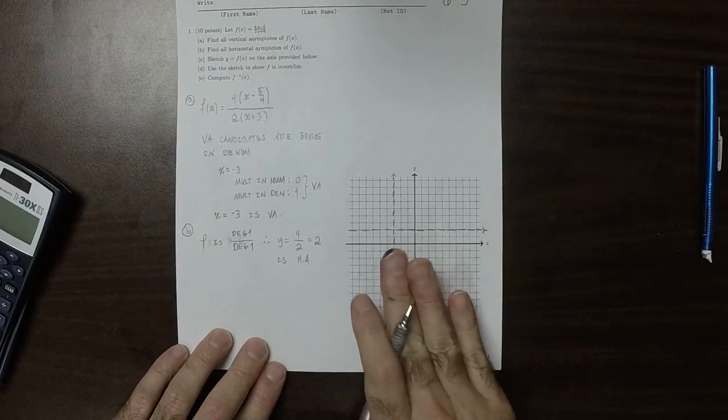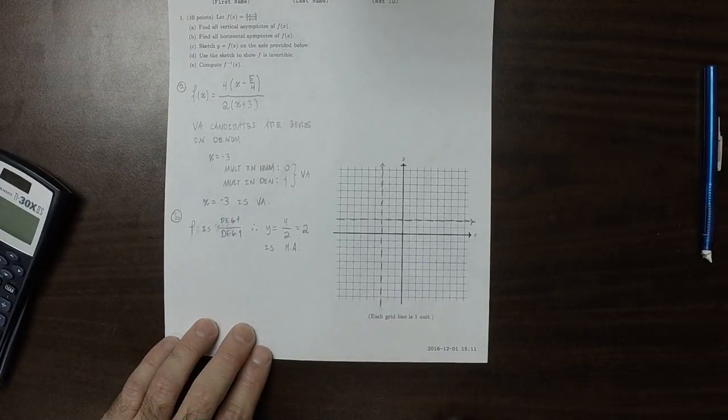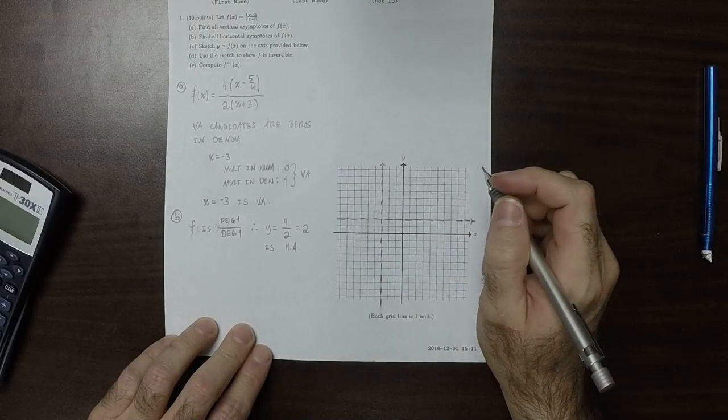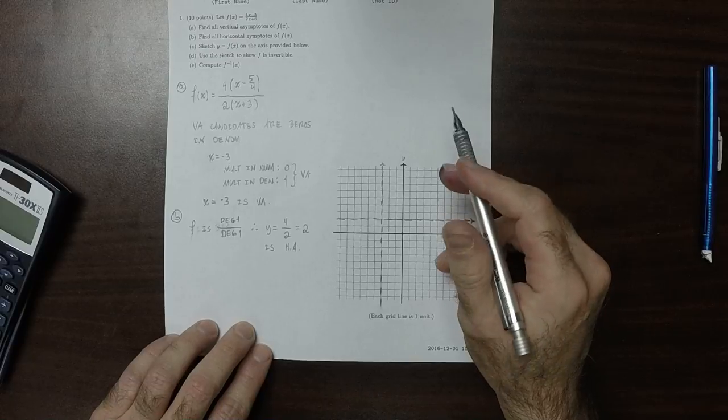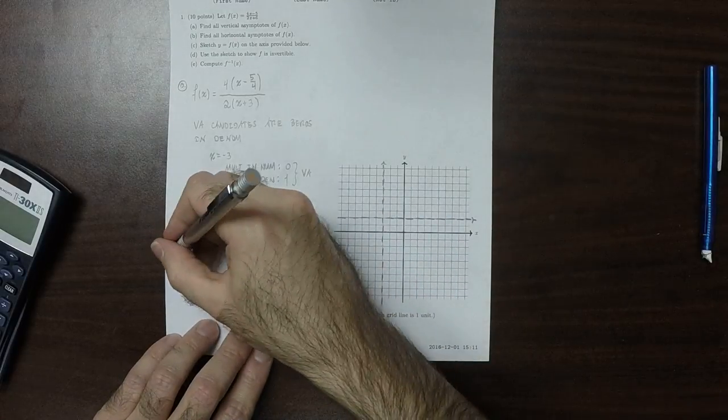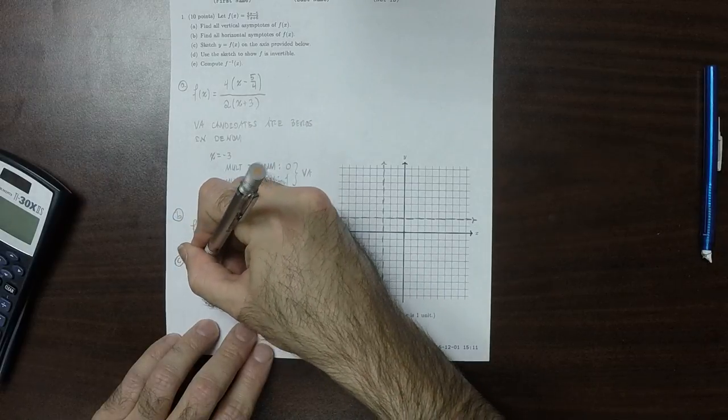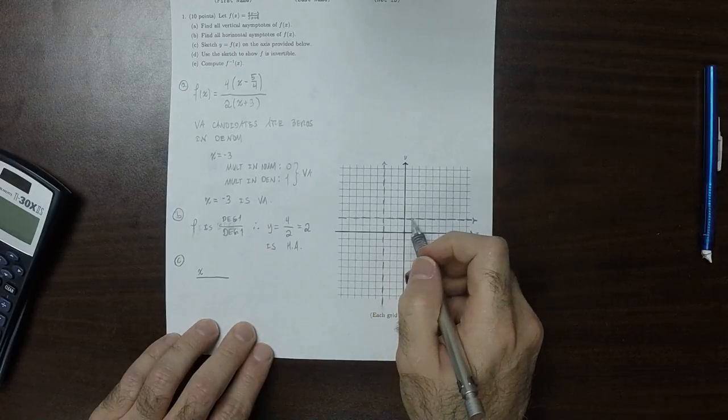We want to sketch this function. Well, let's plot a couple points to try and figure out where F is. So I'll plot an X value to the left of the asymptote and one to the right.